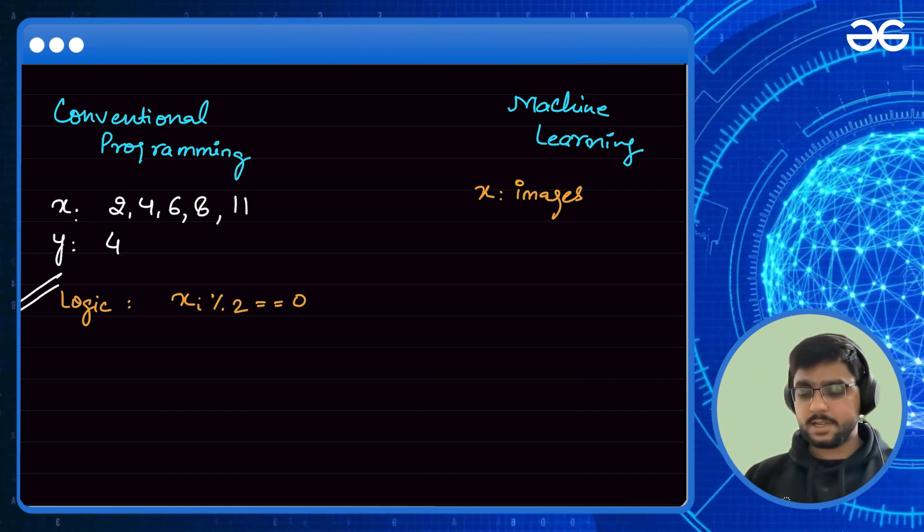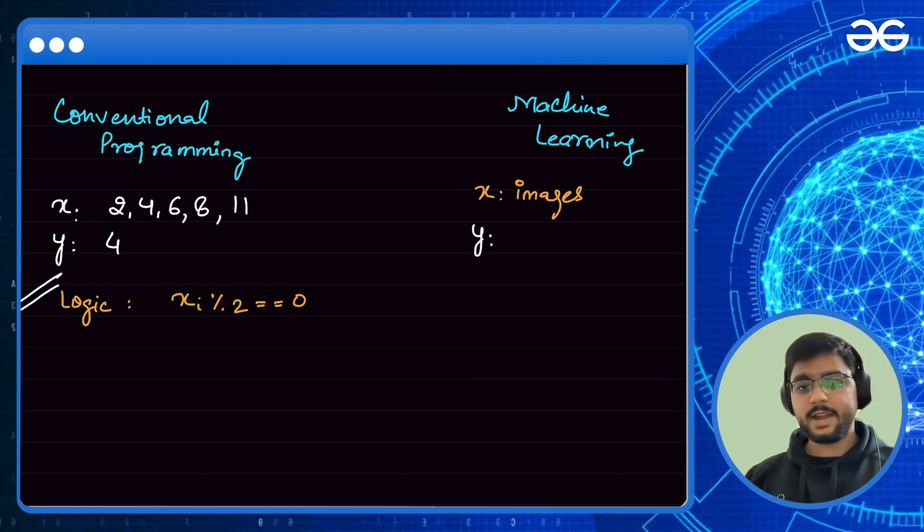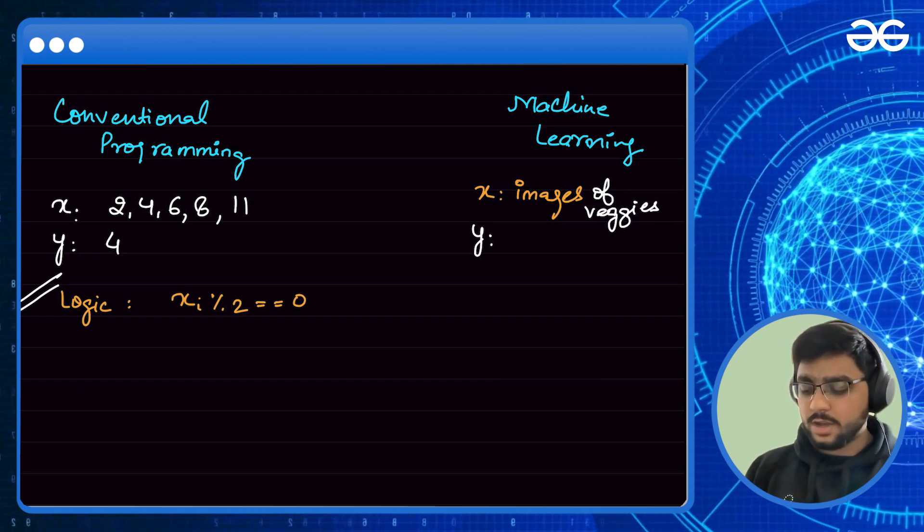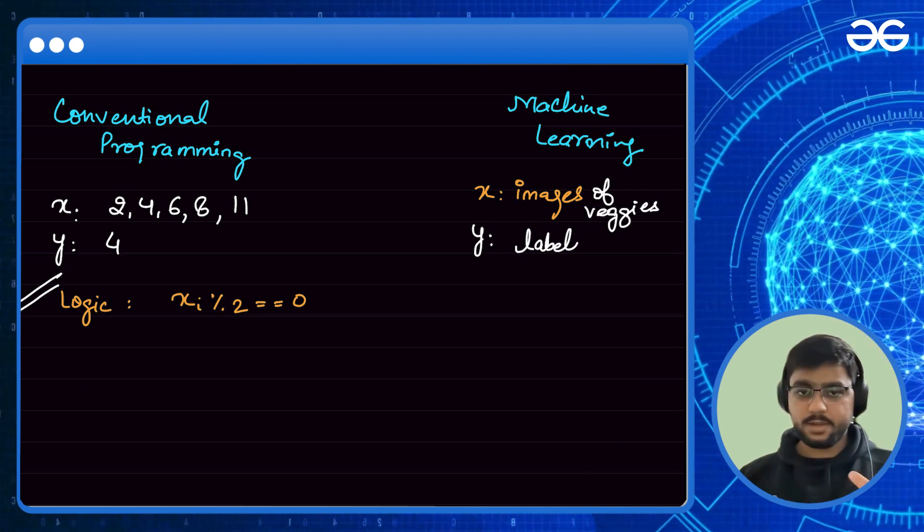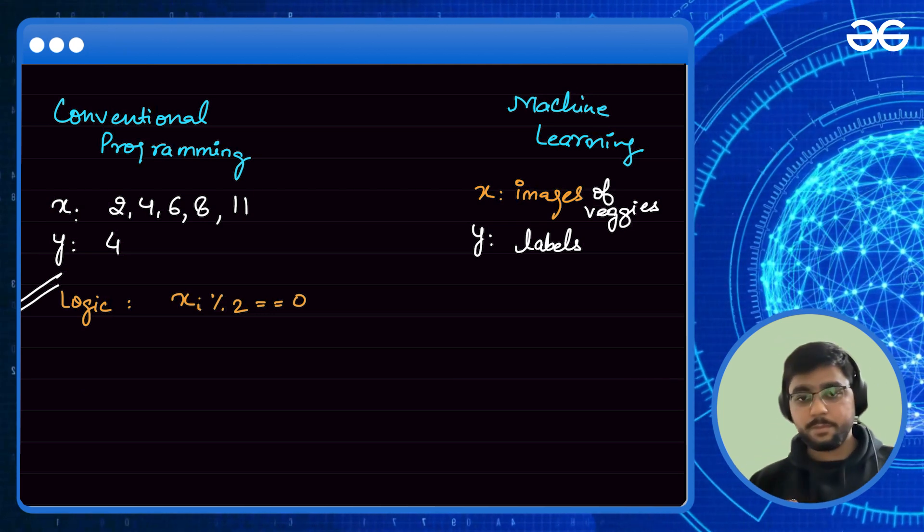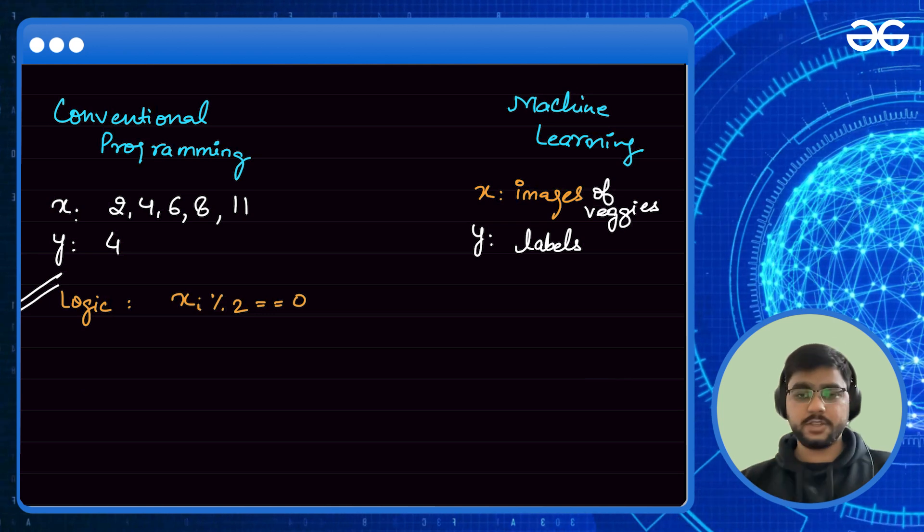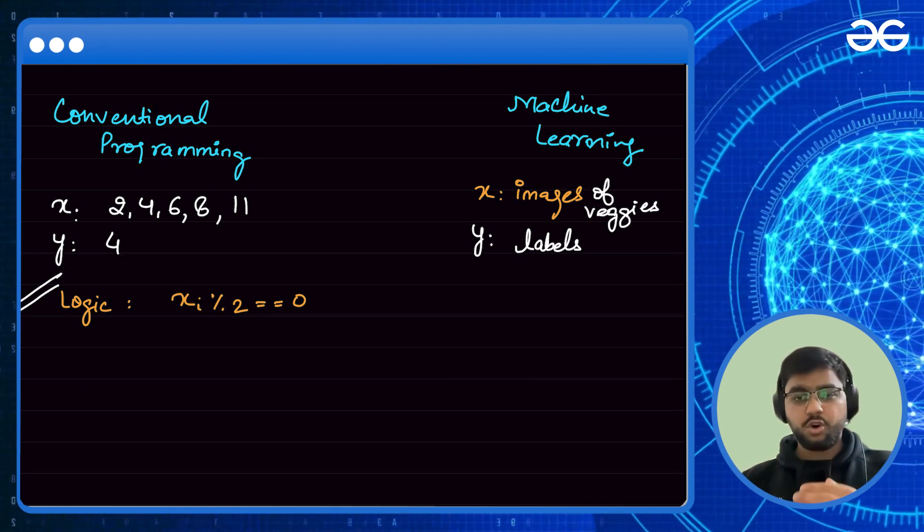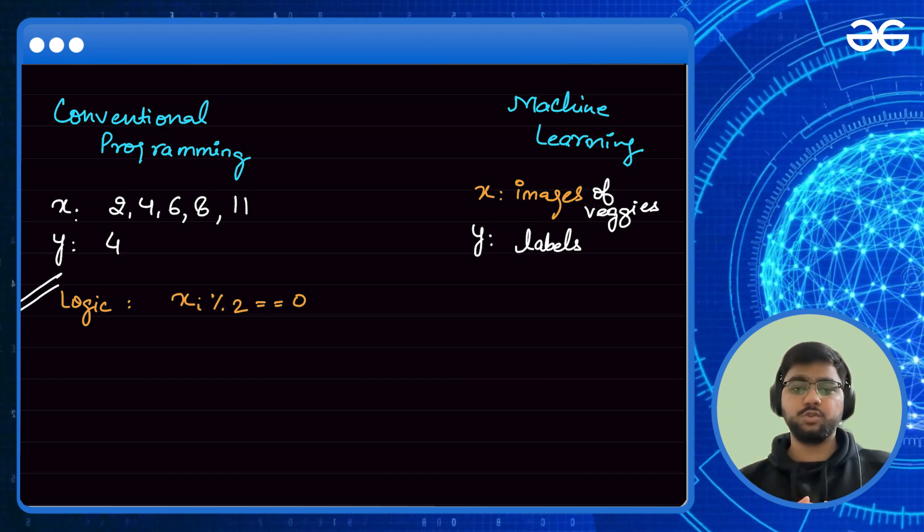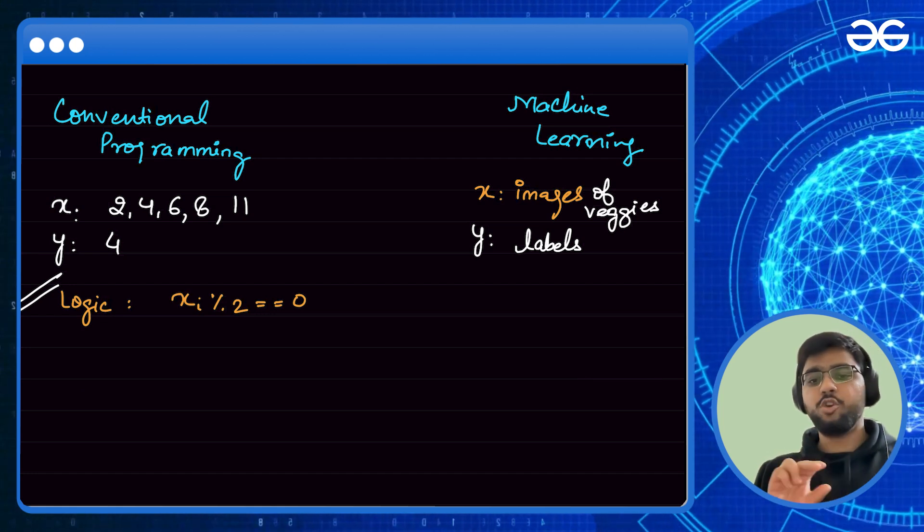Now guys, in this particular scenario, you are not giving logic by yourself, but you are giving n number of input and output. So images of those veggies I am giving as an input and as an output, I will be giving the labels to my program. So I am giving, let's say, thousand images of apple, thousand images of orange, thousand images of lemon, and also I am telling my program that this image belongs to this particular veggie. Now your machine learning model will work on your input data as well as the output data - that means the images of the veggies as well as the label of those images.